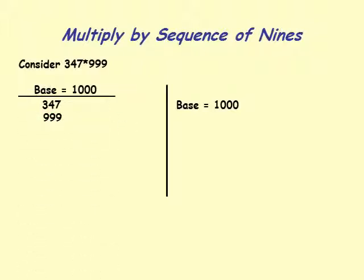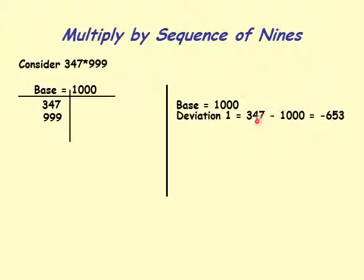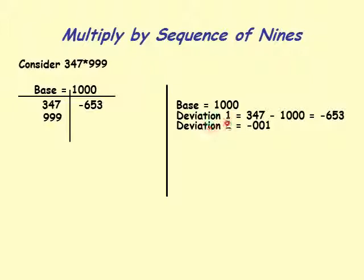Now we compute deviations. Deviation 1 is 347 minus 1000, which equals minus 653. You can compute 653 by using 'all from 9 and last from 10' applied to 347. Deviation 2 for 999 is minus 001 — again using 'all from 9 and last from 10' — because we subtract the larger number from the smaller.